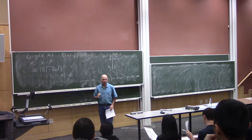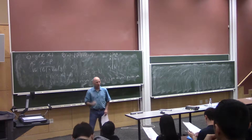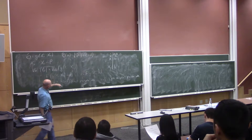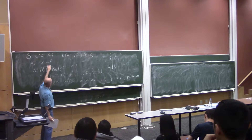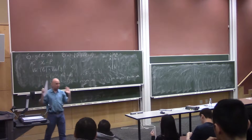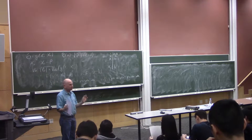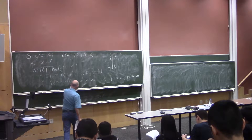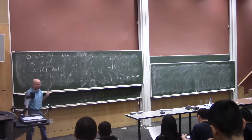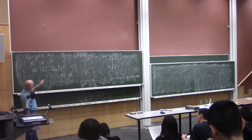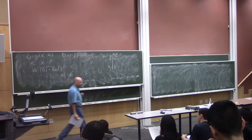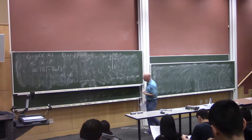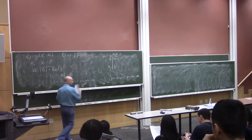Let's start with an easier question: suppose I told you the true distribution p. Maybe it's complicated, but you know it — say it has a density. Now I ask: what's the variance of this estimate? In principle you can compute it by evaluating this integral, even if the distribution is very complicated.